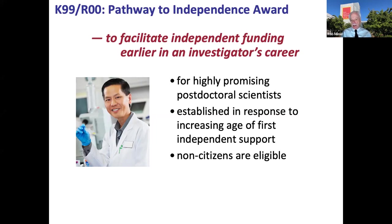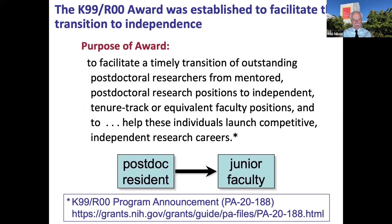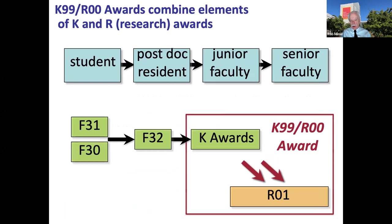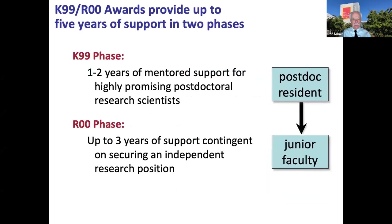The K99R00 is for highly promising postdocs, established in response to those data. Non-citizens and U.S. citizens alike are equally eligible. The purpose is to facilitate the transition from a mentored postdoc into an independent tenure-track or equivalent faculty position. It combines aspects of both a career development award — the K99 — and an R01 — the R00 — coming in two phases with up to five years total support. You apply for the total five years with a single application, outlining what you'll do in each phase: one to two years of mentored support as a postdoc in the K99 phase, leading to up to three years of independent support in the R00 phase.